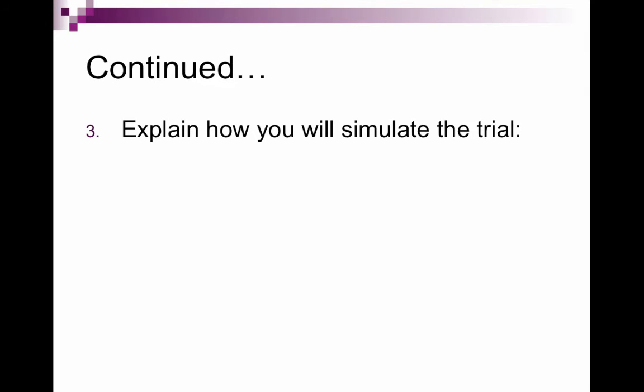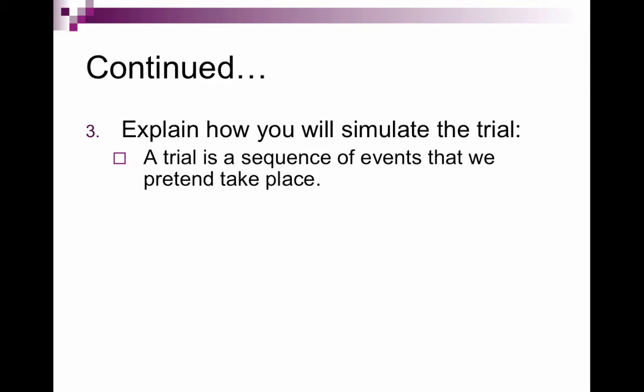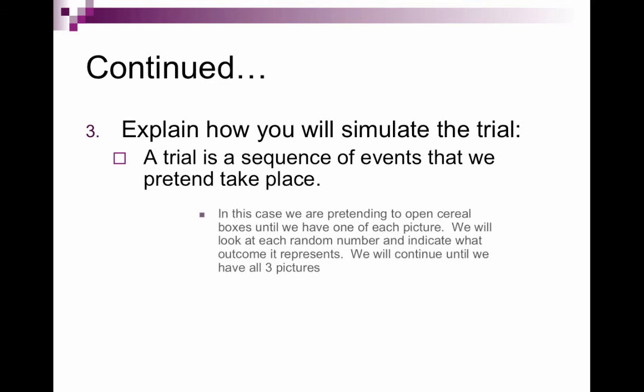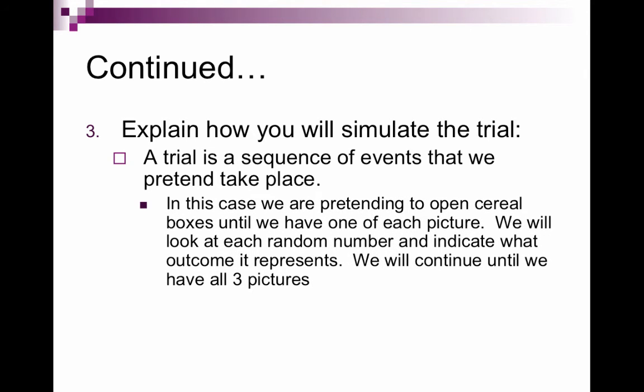Then we have to explain how we are going to simulate the trial. Again, a trial is a sequence of events that we pretend to take place. So for this particular situation, we are pretending to open cereal boxes until we have one of each picture. So we will look at each random number and indicate what outcome it represents. And we will continue until we have all three pictures. So our trial will end when we have at least one of Tiger Woods, at least one of David Beckham, and at least one of Serena Williams. So it may end up being that we have a bunch of two of them and only one of the third one. And that will be okay.